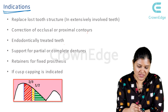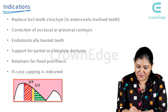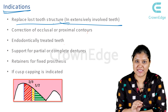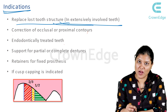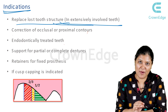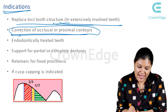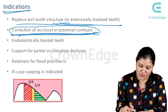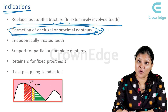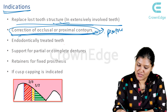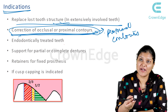What are the indications? When you have to replace a large, extensively involved tooth — that means the caries is extensive — and you need to involve a big amount of tooth structure and rehabilitate that. Correction of occlusion and proximal contours: this is the best restoration for controlling proximal contours and contact areas.